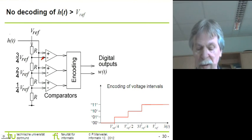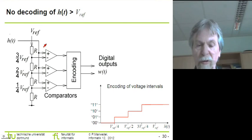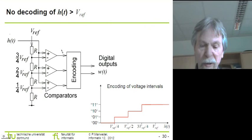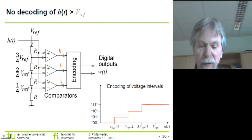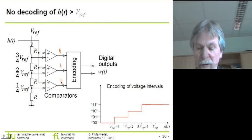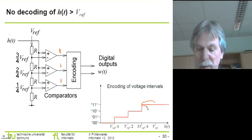There are a couple of these comparators. Let's assume we have some input voltage which is somewhere between the reference voltage and three quarters of the reference voltage. In that case, the top comparator would generate a one. But the other comparators would also generate ones because the input voltage is also larger than two quarters and larger than one quarter of the reference voltage. So we are somewhere in that area of the diagram.